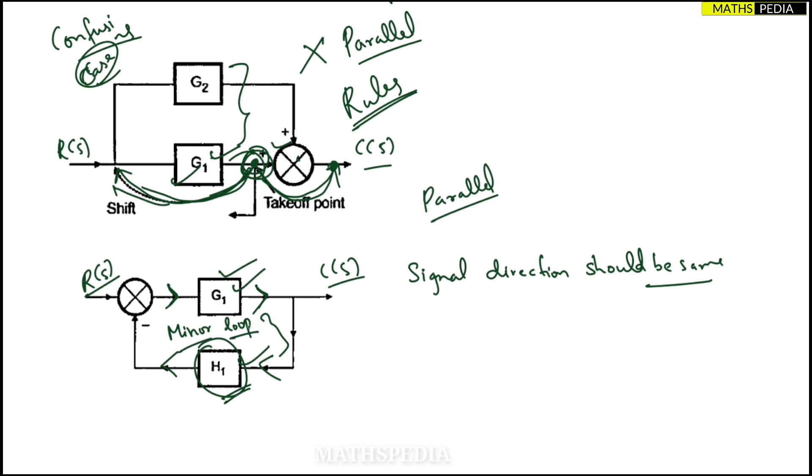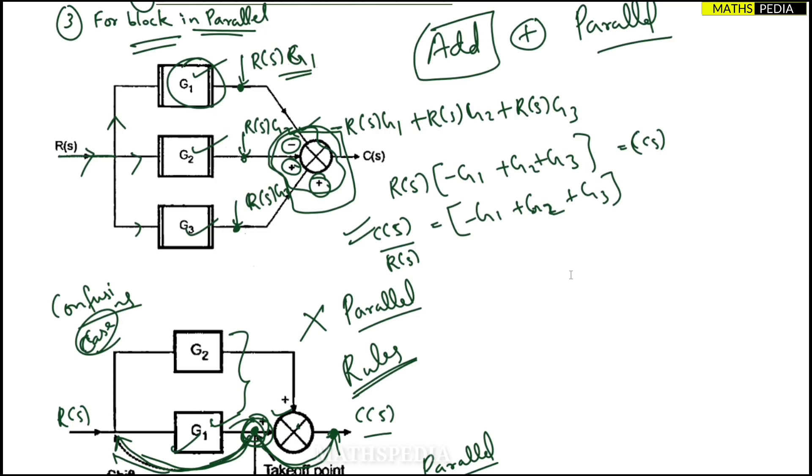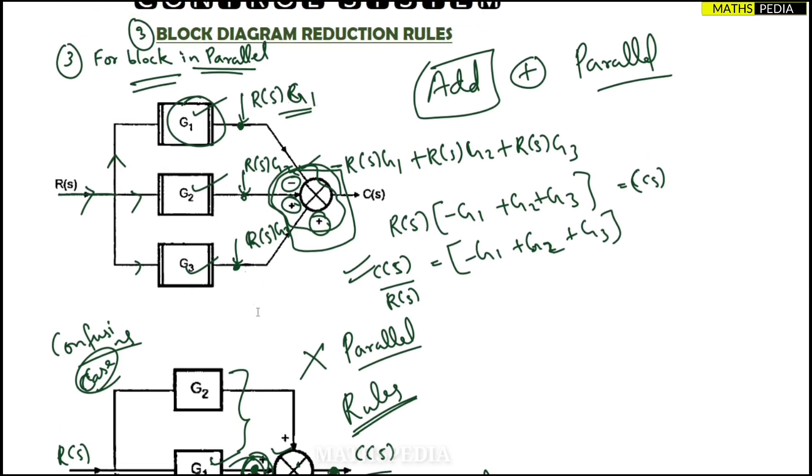But for now you have to understand that these two cannot be called parallel because the signal directions are not same. But if you observe the first case where we have discussed here, if you observe the direction of signal, signal is same. That means it is going towards this one, this one, this one. So here it is the direction towards right side through all the blocks.